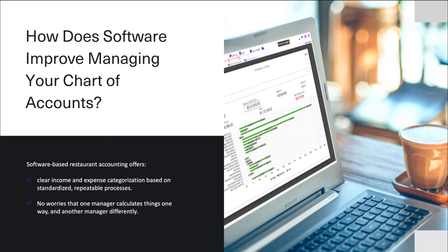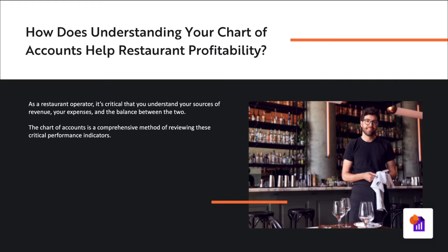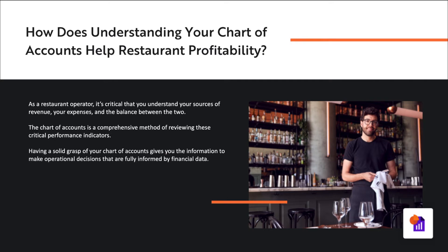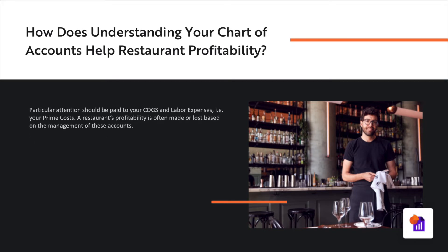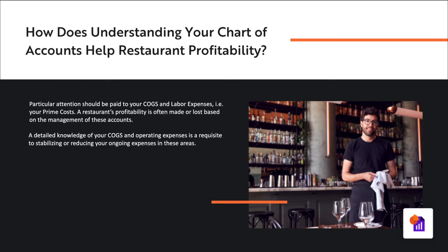Razzie stands out in this respect as the leading all-in-one solution for the back office. As a restaurant operator, it's critical that you understand your sources of revenue, your expenses, and the balance between the two. The chart of accounts is a comprehensive method of reviewing these critical performance indicators. Having a solid grasp of your chart of accounts gives you the information to make operational decisions fully informed by financial data. Particular attention should be paid to your cost of goods and labor expenses — your prime costs — as a restaurant's profitability is often made or lost based on the management of these accounts.